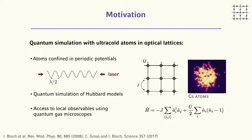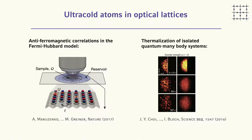I picked two examples to illustrate the types of experiments one can do. On the left you see an experiment from Marcus Greiner's group where a low-temperature, low-entropy Fermi gas was prepared at half filling in the lattice, and the temperature was low enough to see antiferromagnetic correlations. By implementing a quantum gas microscope and blowing out one spin component, you see a nice checkerboard pattern in the density distribution. This is a very rich area to explore with quantum simulations.